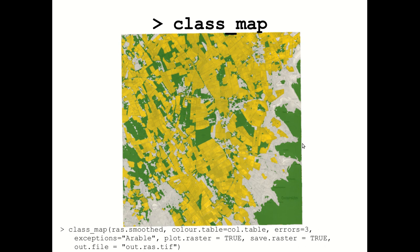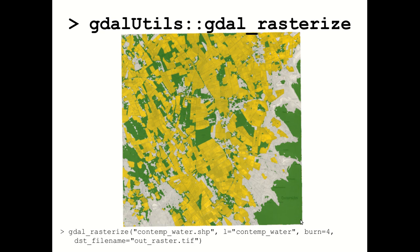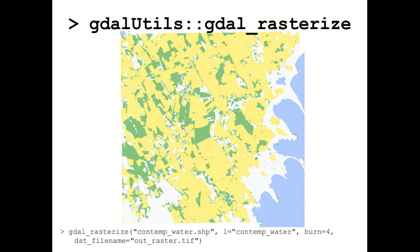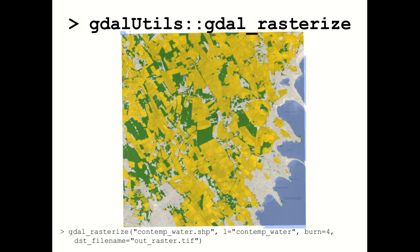However, as mentioned earlier, water isn't always denoted well — here we have a large forest appearing in the middle of the Baltic Sea, which we don't want. So we use the GDALUtils package, which has GDAL Rasterize, to take a shapefile of contemporary water bodies — ours downloaded from the Swedish Mapping Agency — and burn an additional water category onto our existing map. You can see now we have the coastline and a couple of lakes, and overlaying that onto the original map, it looks a lot better with all four land use categories represented correctly.